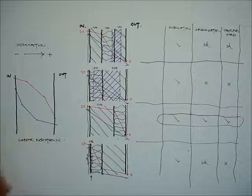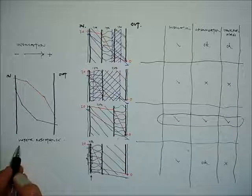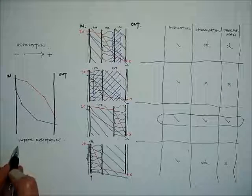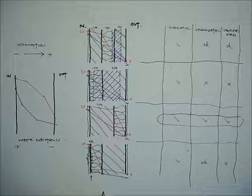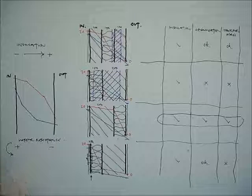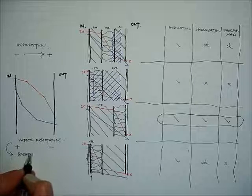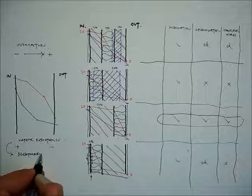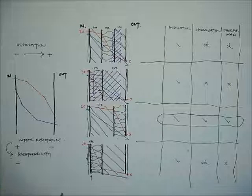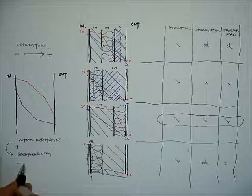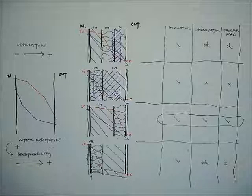Similarly, to get that form for the dew point temperature, the vapour resistance of the wall is high on the inside and low on the outside. But another way of thinking about that is breathability of the wall is low on the inside and that breathability increases as you move to the outside.